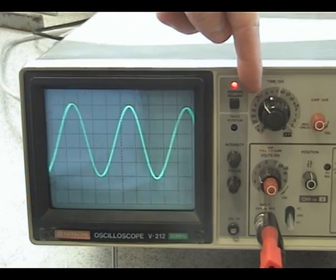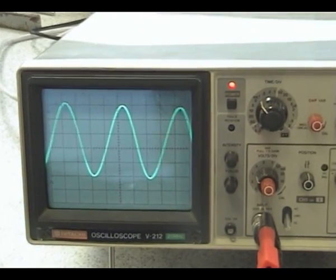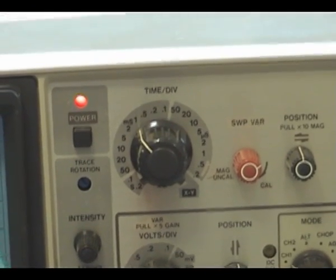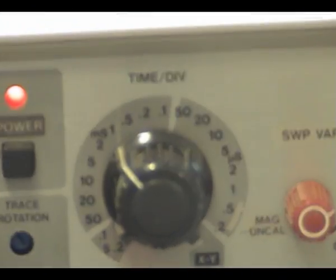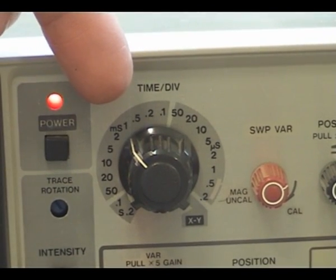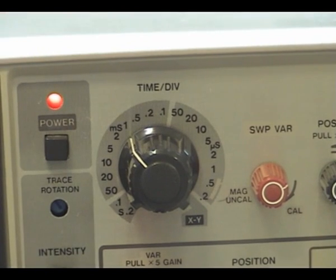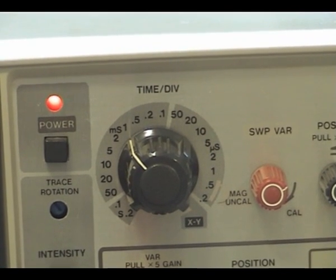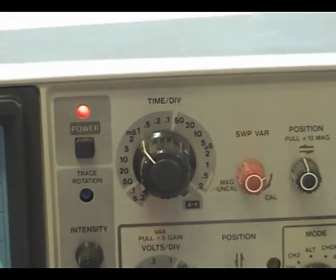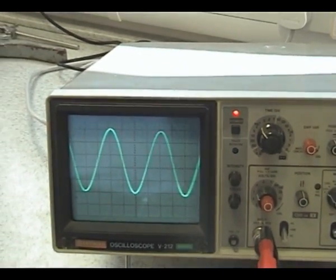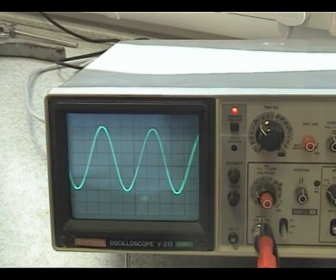The time for one wave can be read from the time-base setting on the CRO. The time-base setting is set at one millisecond per box, or one millisecond per centimeter, which means that our wave, which was four centimeters long, takes four milliseconds to be produced. That's the period of the wave: four milliseconds.